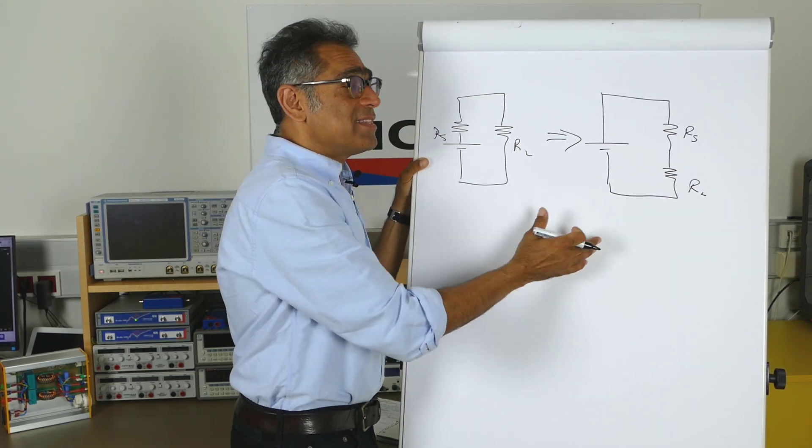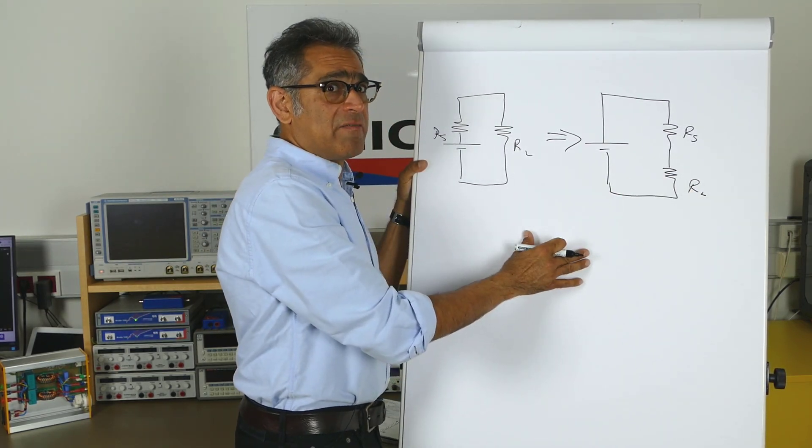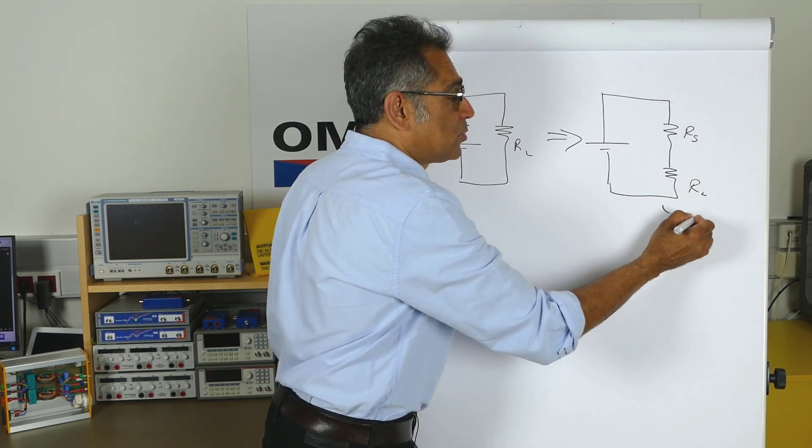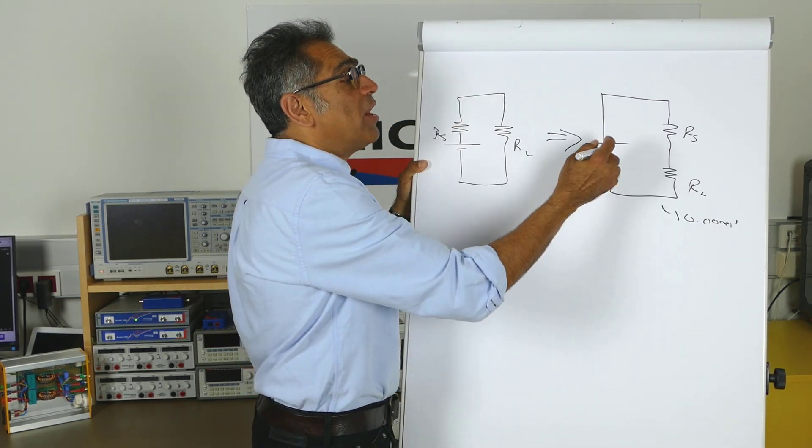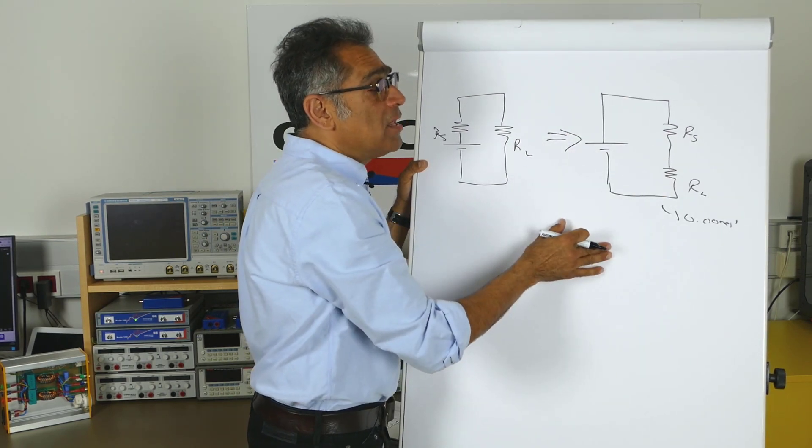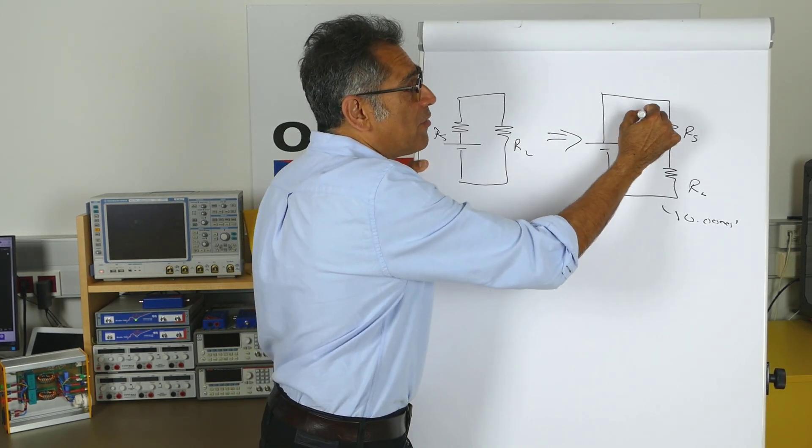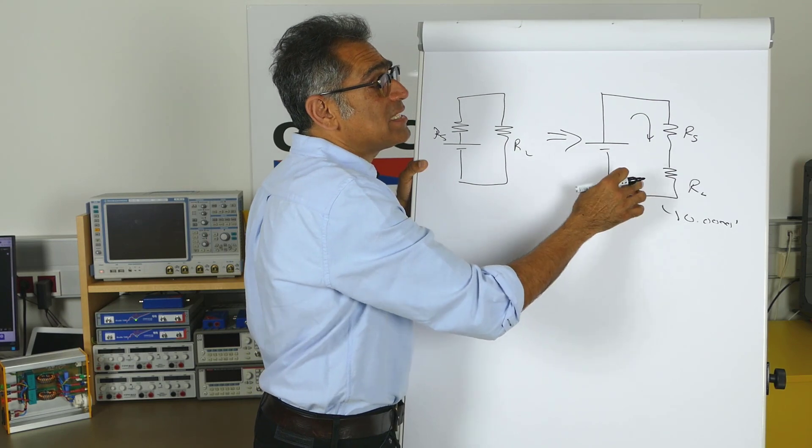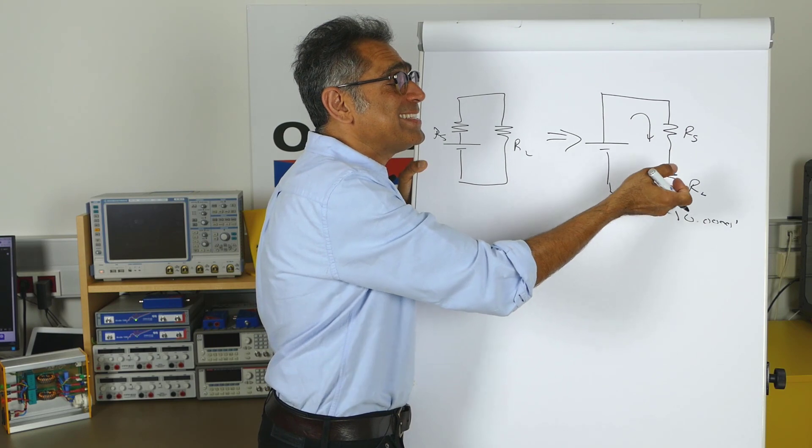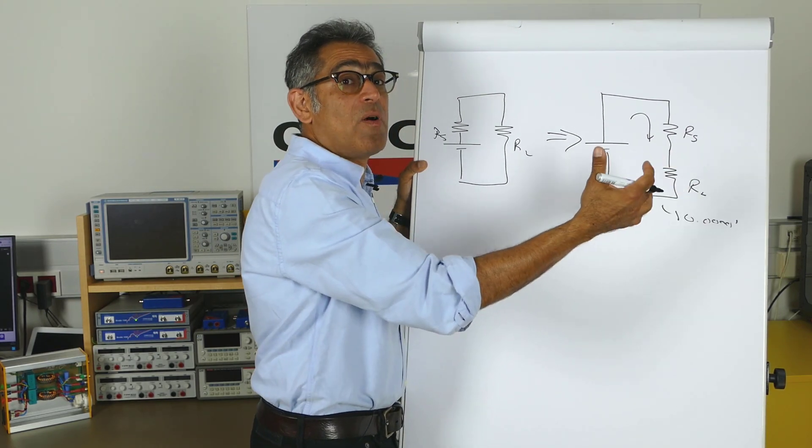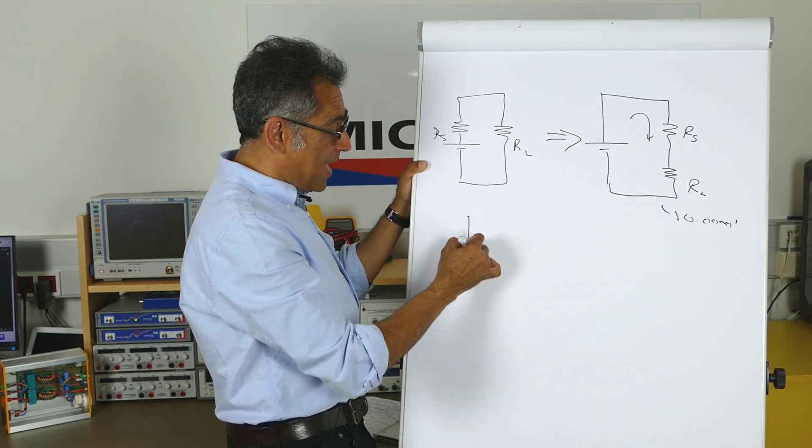Now imagine that initially RL is very low. Well, let's say it's 0.000001, whatever. And I'm trying to deliver power to RL. Now what happens is even though the current that is flowing through there is going to be big, because the value of RL is very small, the amount of power that is delivered to RL is actually quite small. If I were to plot that,